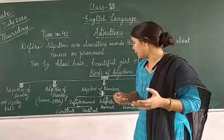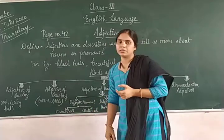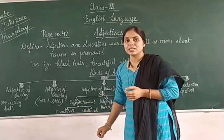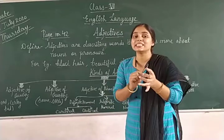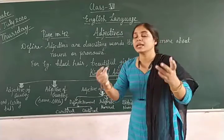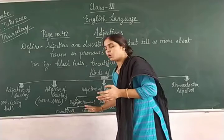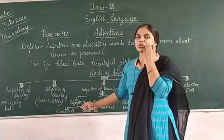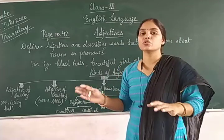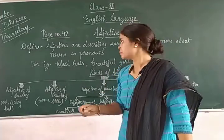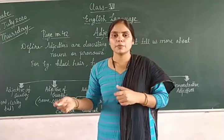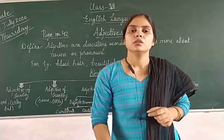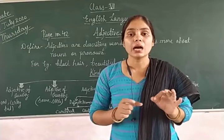They may be cardinals or ordinals. Cardinals are like two books, three books, five books, four books, one letter — these are called cardinals.